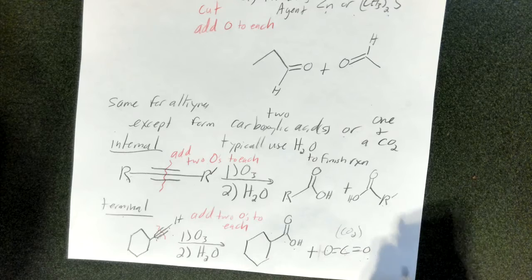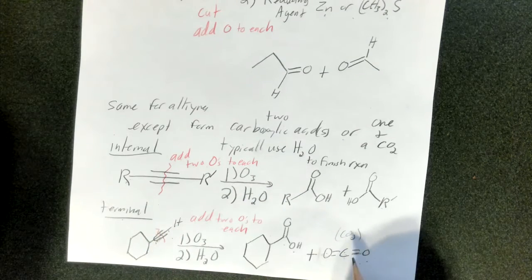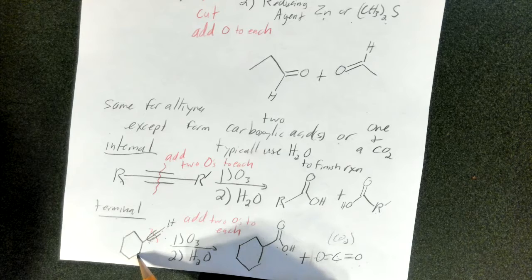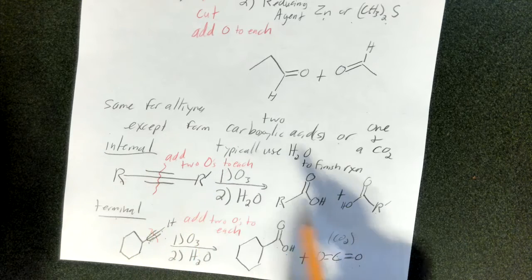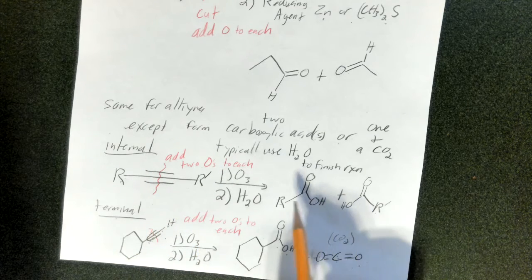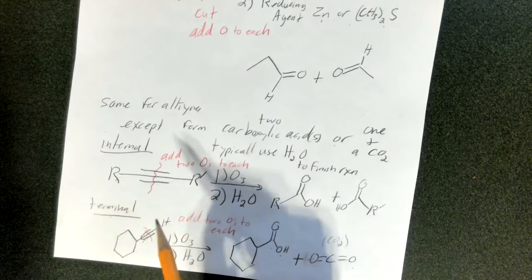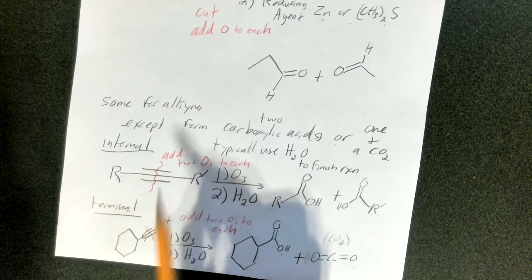So in the end, that is what you get. If it's a terminal alkyne, you get carbon dioxide and a carboxylic acid that has the same R group as the alkyne. And if it's an internal alkyne, you get two carboxylic acids, each with the R groups that were on the two sides of the alkyne.